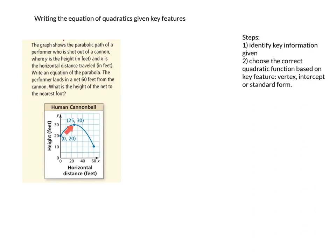We're given two pieces of information. We're given the y-intercept (0, 20). That's his starting point — he's starting 20 feet above the ground, not on the ground. Then he reaches a maximum height of 30 feet off the ground when he is 25 feet from his starting point, and then he hits a net 60 feet away from that starting point.